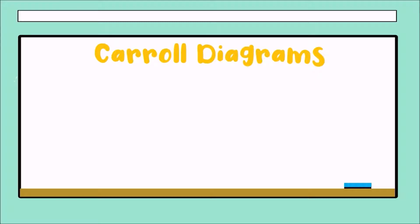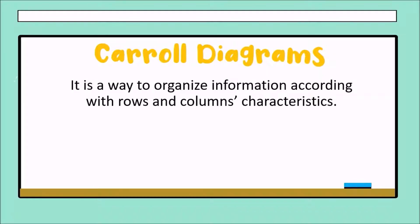Today we are going to talk about Carroll diagrams, but what is a Carroll diagram? A Carroll diagram is a specific way to organize information according to rows and columns characteristics.